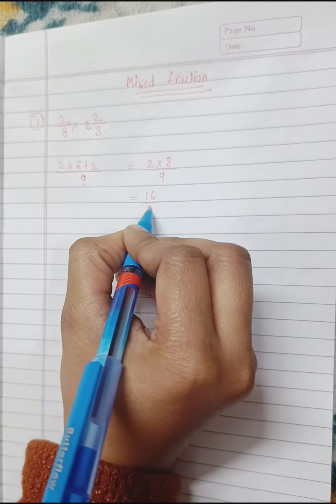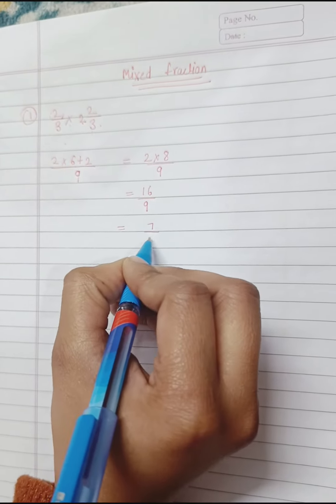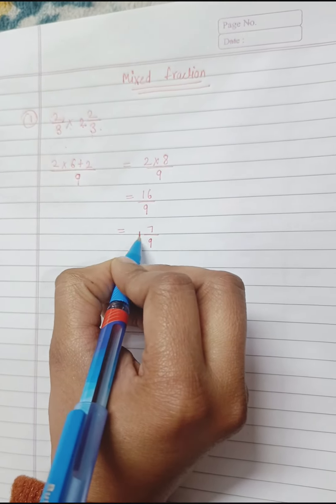So when we divide it, our answer will be 7 upon 9 by 1.